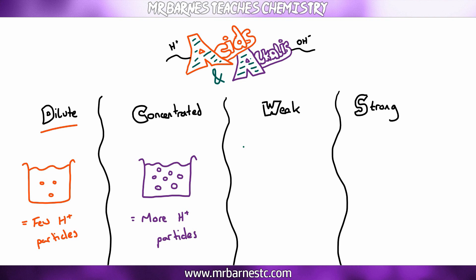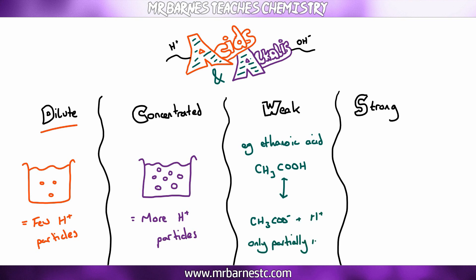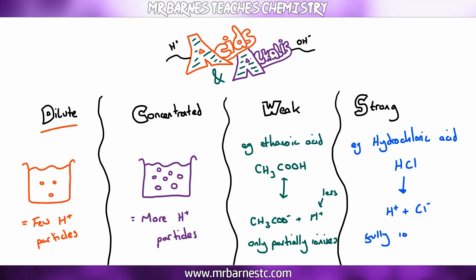For weak and strong acids: a weak acid like ethanoic acid (CH3COOH) only partially dissociates or ionizes in solution, so you get very few H+ ions. A strong acid like hydrochloric acid fully ionizes — HCl splits completely into H+ and Cl- ions — giving you a lot more H+ ions in solution.